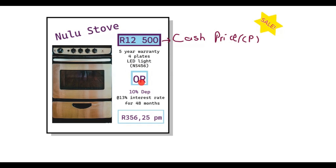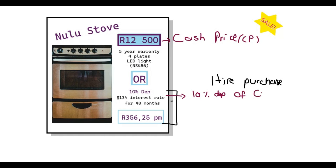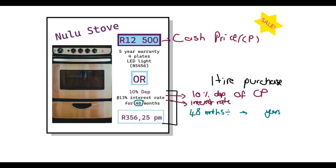Let's say you don't have enough money and you want to buy this on hire purchase. If you make a hire purchase agreement, you need to put down a ten percent deposit in the beginning, and this ten percent is of the cash price. The remainder of the money will be a loan that you have to pay back. The term is over forty-eight months — if I convert that to years I divide by twelve, because there are twelve months in a year, and that gives me four years.